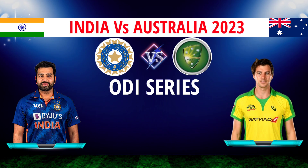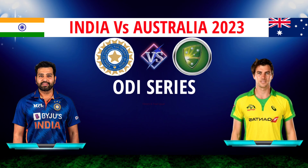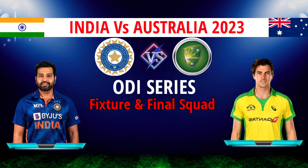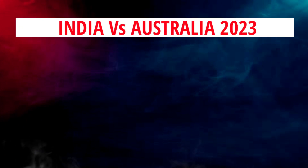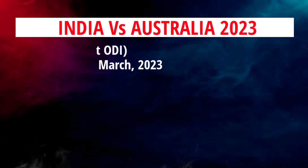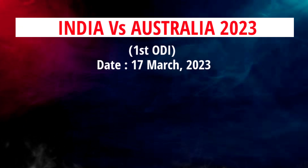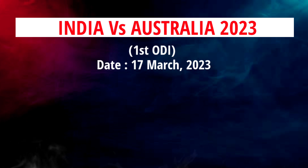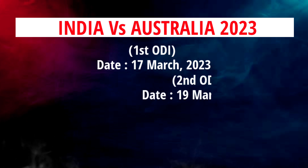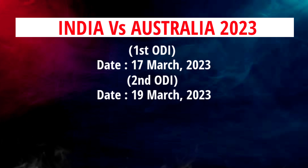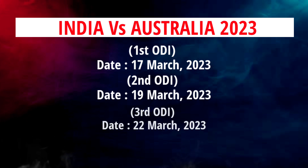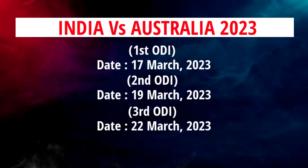India vs Australia ODI Series 2023 schedule and Team Australia final squad. The first ODI match is on 17th March 2023, the second ODI match is on 19th March, and the third and last ODI match is on 22nd March 2023.